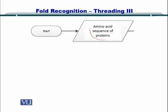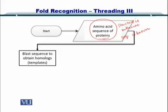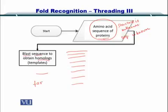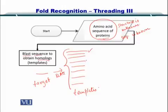You have your amino acid sequence of the protein whose structure is unknown but sequence is known. Next, you BLAST this sequence to obtain homologues. So you have your target sequence and these are your templates. You compare it using BLAST with all of these sequences and you find those sequences which are nicely matching to your target.